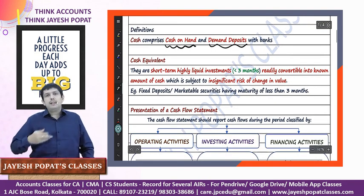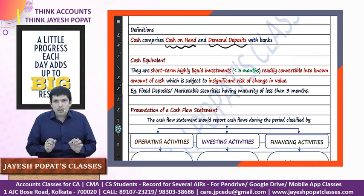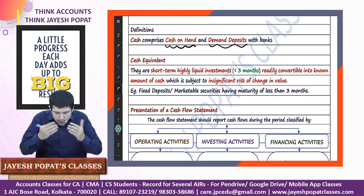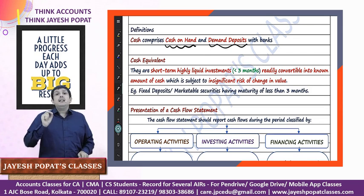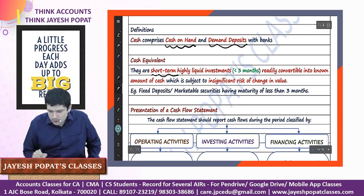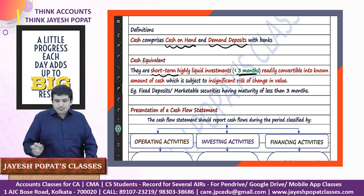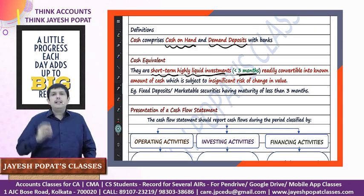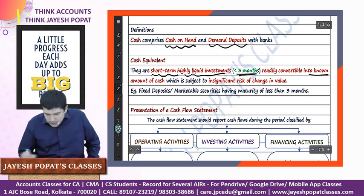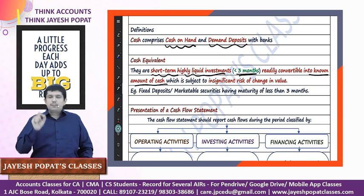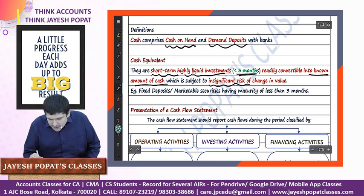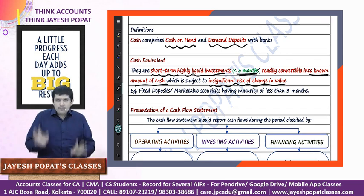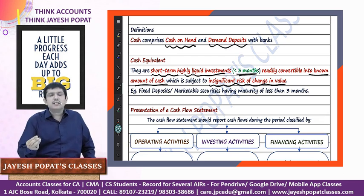Cash equivalents have been defined as short-term, highly liquid investments readily convertible into a known amount of cash and which are subject to insignificant risk of change in value. Short-term means the investment tenure is less than 3 months. They are highly liquid - whenever you want you can dispose of these investments and convert to cash. You exactly know at each point of time what amount you will realize, and there is no significant risk of change in value. Normally marketable securities and fixed deposits of a tenure of less than 3 months will be considered as cash equivalents.